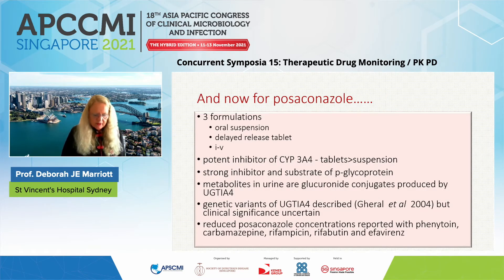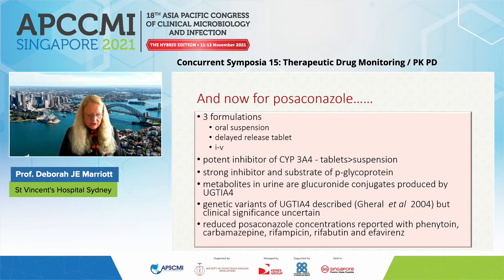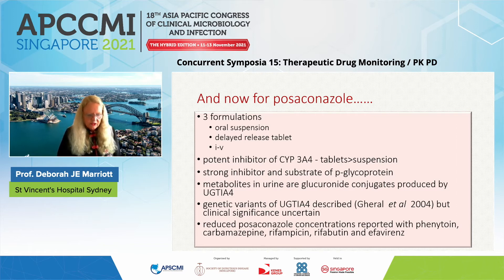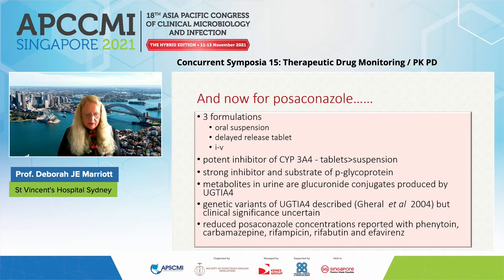Briefly on posaconazole: there are three formulations — the oral suspension, the delayed-release tablet, and the IV formulation. Posaconazole is a potent inhibitor of 3A4 (more so the tablets than suspension), and also an inhibitor and substrate of P-glycoprotein. It is not metabolized by 3A4 but via the UGT1A4 glucuronidation pathway. Genetic variants of this pathway are described but significance is uncertain. Posaconazole concentrations are clearly reduced in the presence of phenytoin, carbamazepine, rifampicin, rifabutin and efavirenz, probably via the P-glycoprotein pathway.